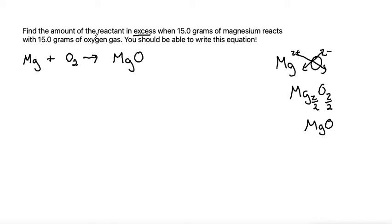Also, keep in mind that oxygen gas is one of your diatomic molecules, so as an element it always has a subscript of 2. From here, once we've written our equation, we need to balance our equation.